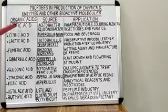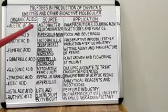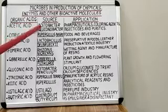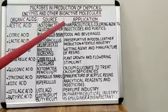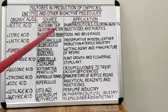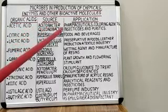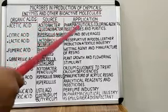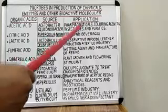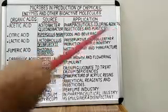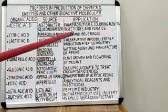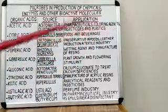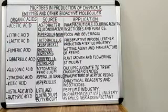Acetic acid is produced using microbes Acetobacter, Gluconobacter, etc., and is used in the production of pharmaceuticals, colouring agents, insecticides and plastics.